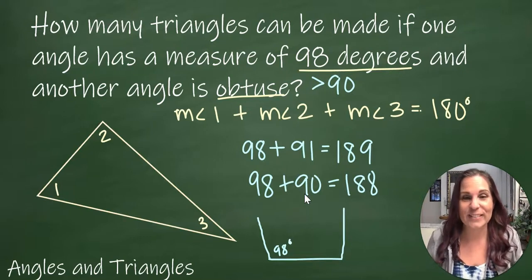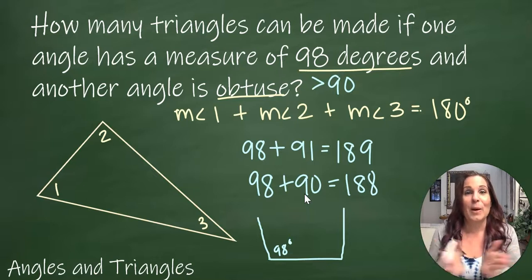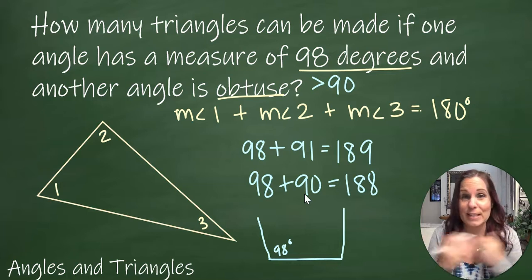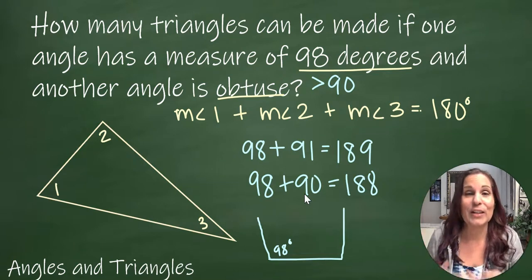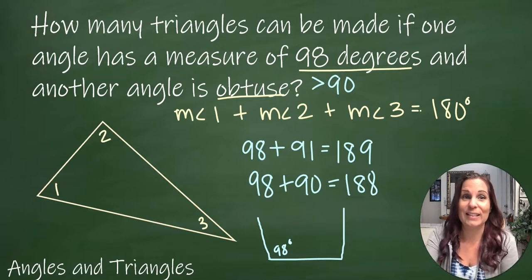Are those two sides ever going to come together to touch to form a triangle? No way. We've already exceeded the number of degrees for the three angles of a triangle just with the first two angles. So how many triangles can be made from these two angles? Zero. None.